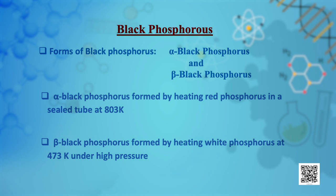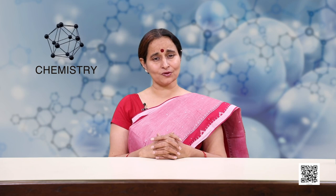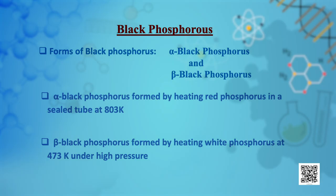Black phosphorus has two forms: alpha black phosphorus and beta black phosphorus. Alpha black phosphorus is formed by heating red phosphorus in a sealed tube at 803 Kelvin. It has opaque monoclinic or rhombohedral crystals and does not oxidize in air. Beta black phosphorus is prepared by heating white phosphorus at 473 Kelvin under high pressure, and it does not burn in air up to 673 Kelvin.